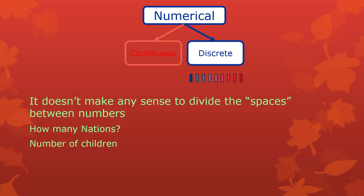Same with number of children. Even though you might know families where there's one child who you think maybe doesn't count as an entire — no, you can't do that. They're still a complete and entire human being. So you can't subdivide that. There are certain types of things you can measure — frequently it's just counting — where you can't really subdivide any further. It doesn't make any sense. And so those are discrete scales.